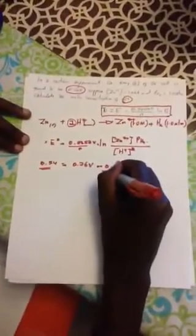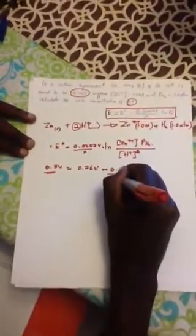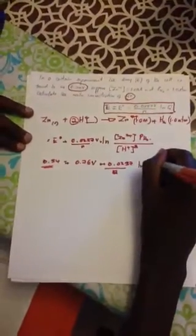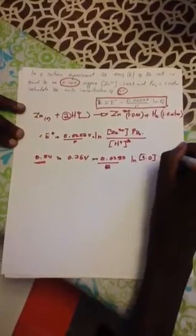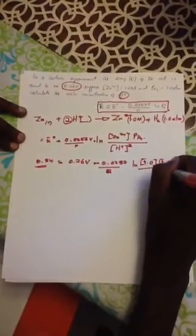all over 2 ln of Q. So, 1.0, 1.0, 1.0 concentrations, divided by concentration of hydrogen ions.